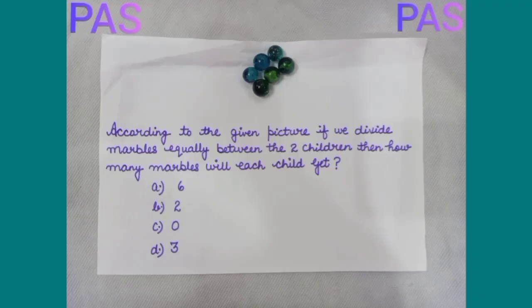Now, question for pairs. According to the given picture, if we divide marbles equally between the two children, how many marbles will each child get? Option A: 6. Option B: 2. Option C: 0. Option D: 3. You can see there are six marbles in the picture, and if we divide these marbles equally between the two children, each child will get three marbles. So the right option is Option D, that is three.